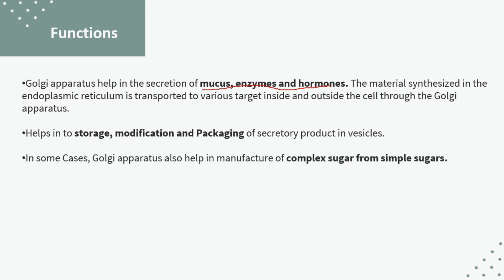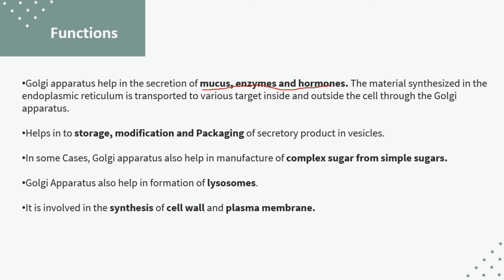In some cases, the Golgi apparatus also helps in manufacturing complex sugars from simple sugars. In some cells, it can synthesize complex sugars from simple sugars, which can be used in glycogen synthesis. The Golgi apparatus also helps in the formation of lysosomes. It is also involved in the synthesis of the cell wall and plasma membrane.